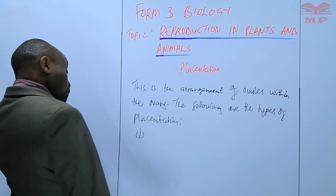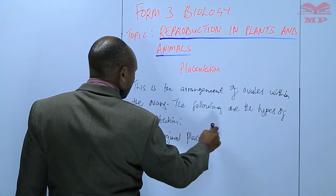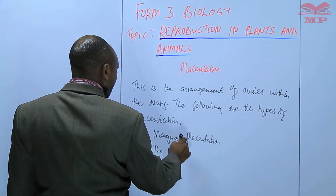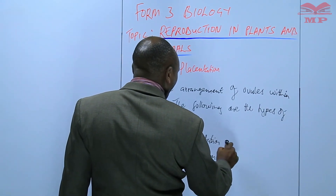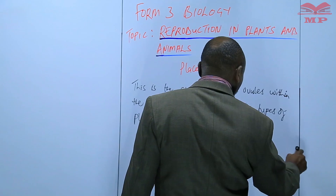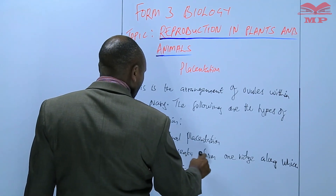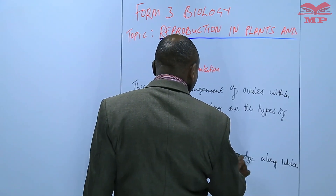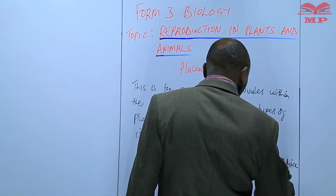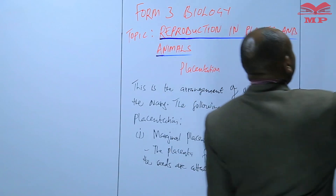The first type is marginal placentation. In marginal placentation, the placenta forms one ridge along which the seeds are attached marginally — along the margin. An example is the legumes or pods, which have marginal placentation, as we had seen earlier in a diagram.